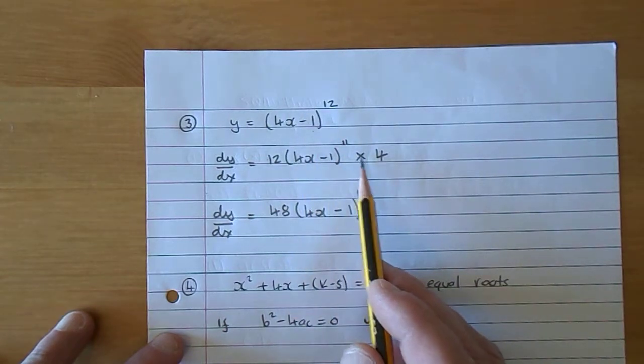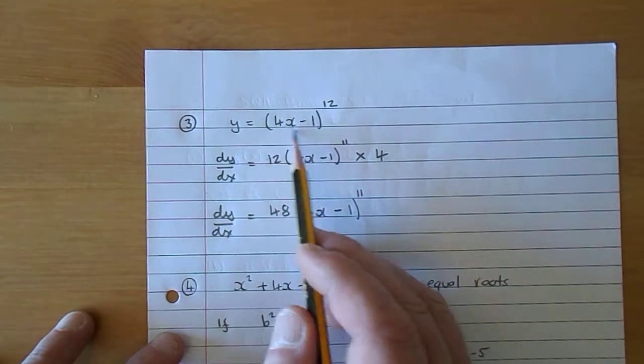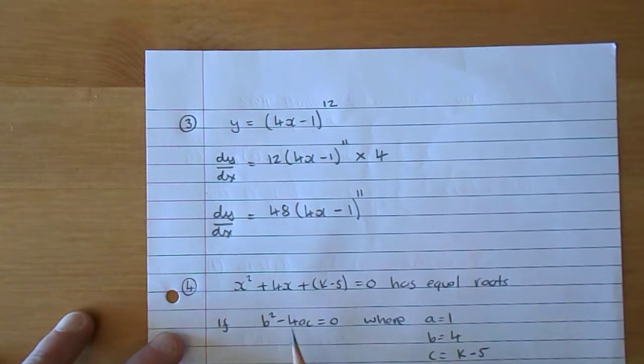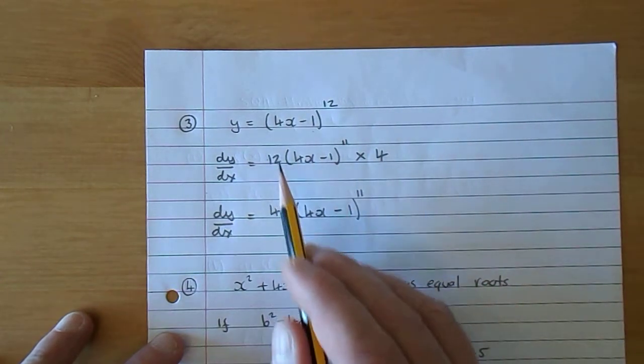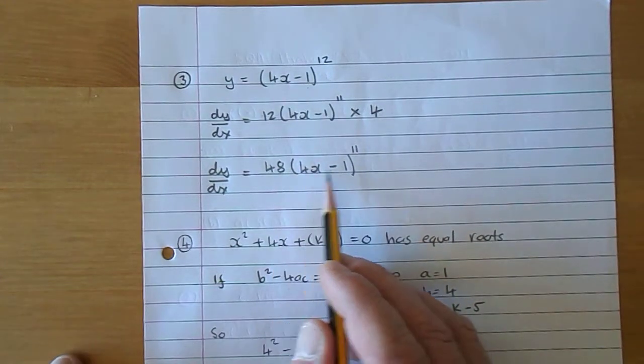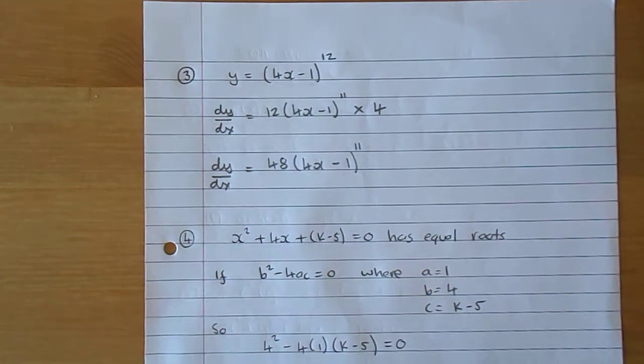The idea is to multiply by what that is differentiated. Differentiate 4x - 1, you get 4, times 12 gives 48, times (4x - 1) to the power of 11.